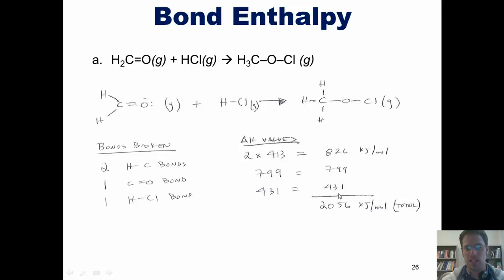The overall value of all of the bonds shown on the left side of this equation is 2,056 kilojoules per mole total.